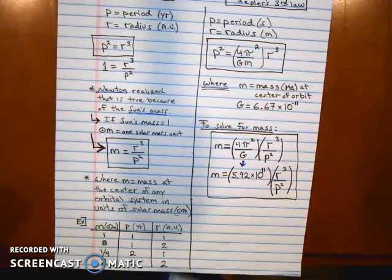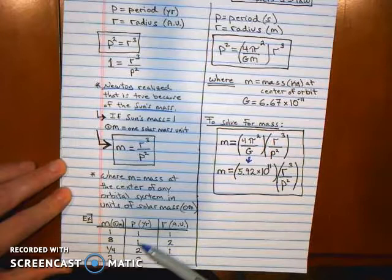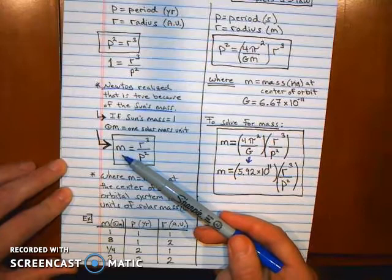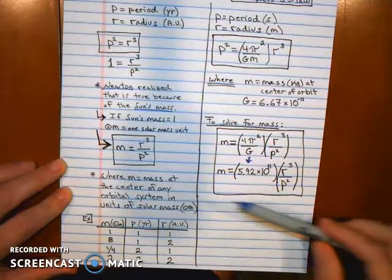Again, I'm just giving you a few examples of how you can substitute some simple numbers into this equation to figure out the mass at the center of any orbital system.